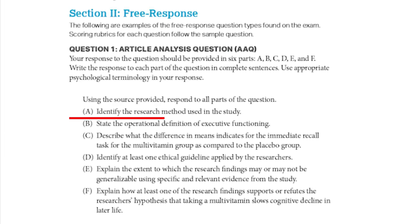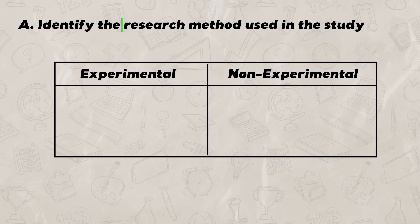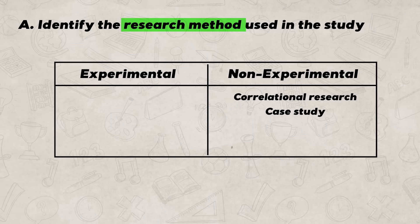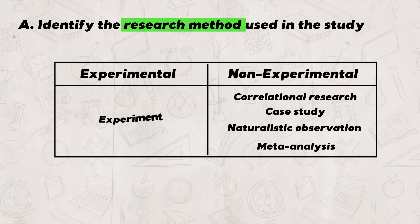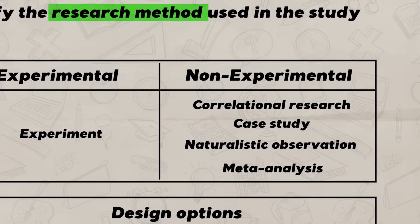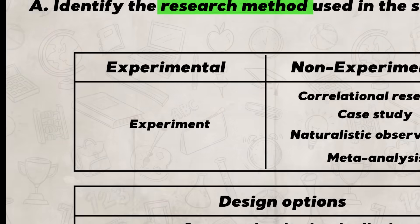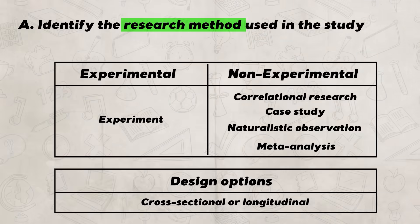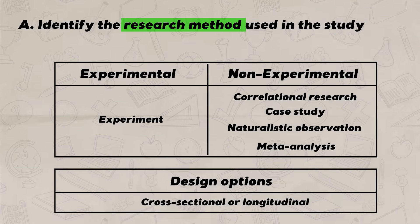For Part A, identify the research method used in the study. There are only seven answers you can give: correlational research, a case study, a naturalistic observation, a meta-analysis, an experiment, or cross-sectional or longitudinal. Notice that four of those research methods are non-experimental, one is experimental, and two are design options. Part A is an identify question, so your answer only needs to be a sentence — you do not need a big in-depth explanation.